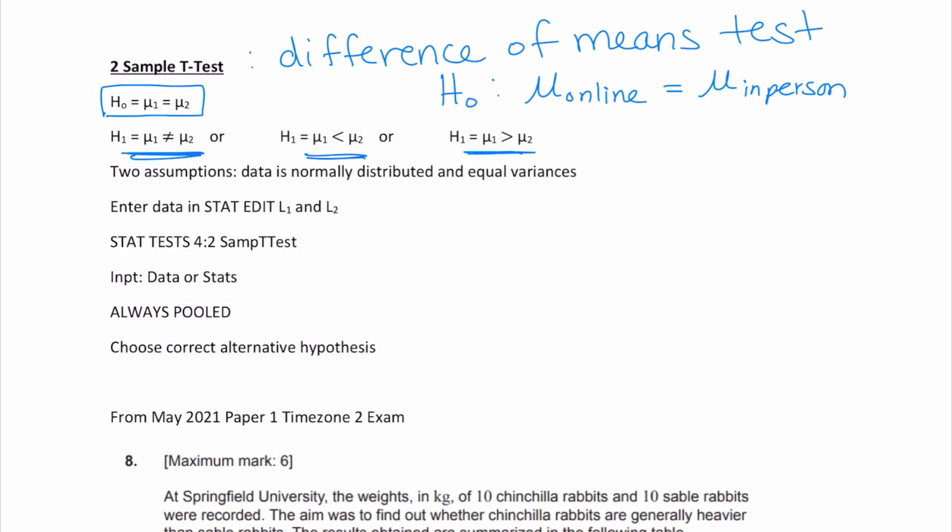There are two assumptions that have to hold true in order for this test to be valid. The data is normally distributed and there are equal variances. They could ask you what are the two assumptions, and you would have to write down that the data is normally distributed and we have equal variances. This is for the AI course. Most of the time, you're just going to see it written on the actual problem itself. Don't get confused with a normal distribution problem. These are just the assumptions that have to hold true in order for this test to be valid.